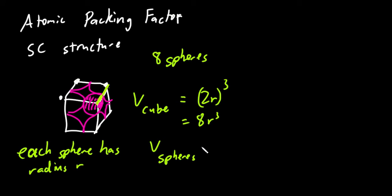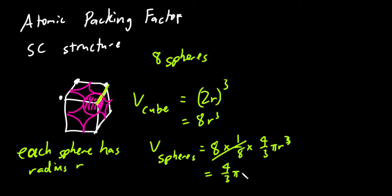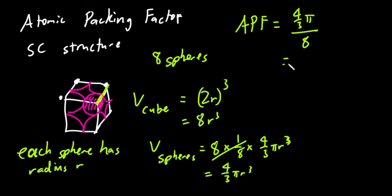The volume of the spheres is eight times one eighth of the volume of one sphere, so that's (4/3)πr³. Dividing volume of spheres by volume of cube gives (4/3)π divided by 8, which is π/6. So the atomic packing factor for a simple cubic structure is π/6.